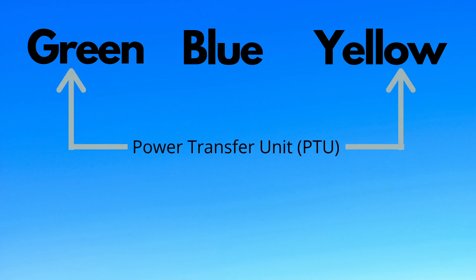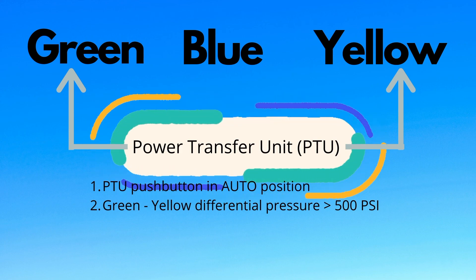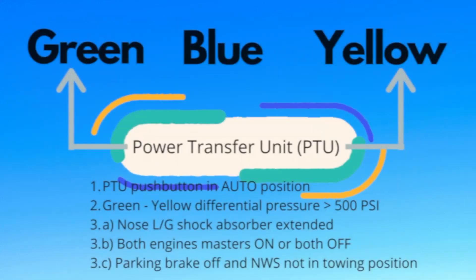A bi-directional power transfer unit enables the yellow system to pressurize the green system and vice versa, called the PTU. The PTU is switched when the following three conditions are met: PTU push button switch is on auto, differential pressure between the green and yellow system is more than 500 PSI. Thirdly, any one of the following conditions is satisfied.